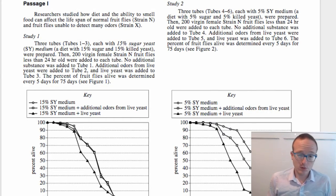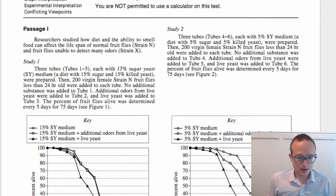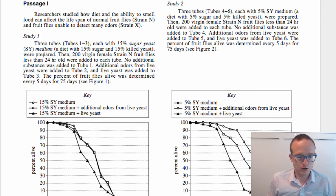But one thing that you can do to speed up your time and your attention is to not do a lot of reading. So if I'm looking at this passage one here, I've got all this kind of boilerplate stuff. Usually this little prompt, this little summary of the experiment, is good to read. Researchers studied how diet and the ability to smell food can affect the lifespan of normal fruit flies and fruit flies unable to detect many odors, strain X.